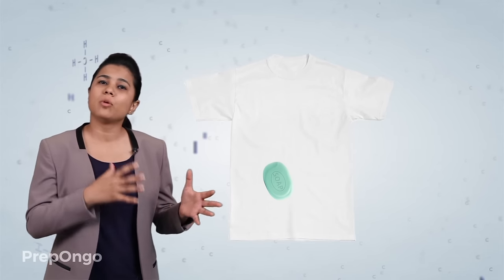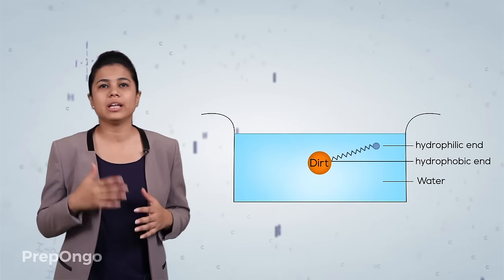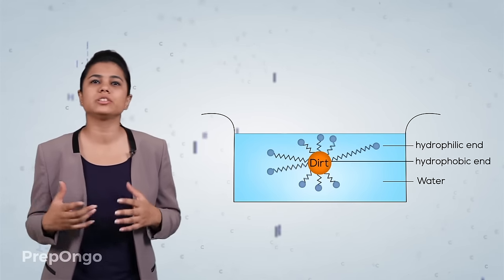When we apply soap to the stain of oil or grease in the cloth then the molecules of soap take a unique orientation. The hydrophobic ends get attached to the oil and the hydrophilic ends dissolve in the water.